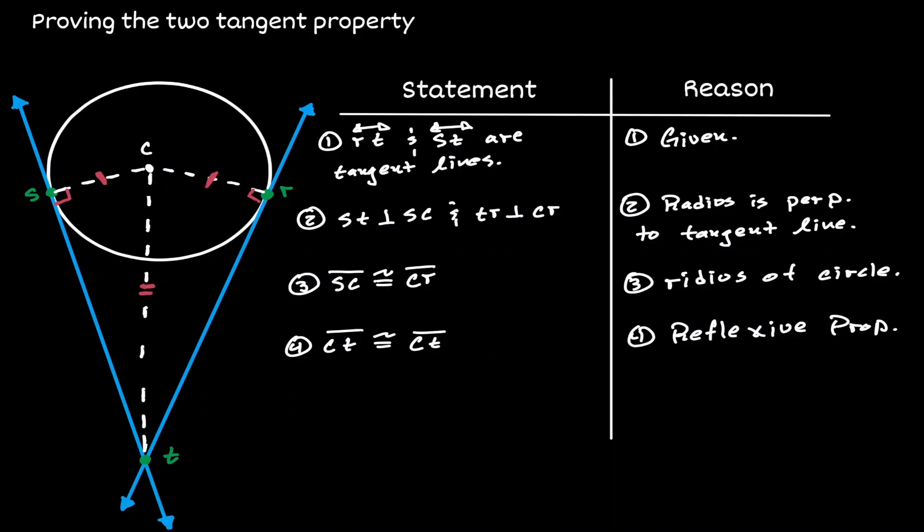Now we can claim that both of those triangles are congruent to each other. They both are 90 degrees. They both have a congruent leg. And the hypotenuse of the triangle on the right is congruent to the hypotenuse on the triangle on the left because it's the same side. Then by the hypotenuse leg theorem, we can claim that both of those triangles are congruent to each other.